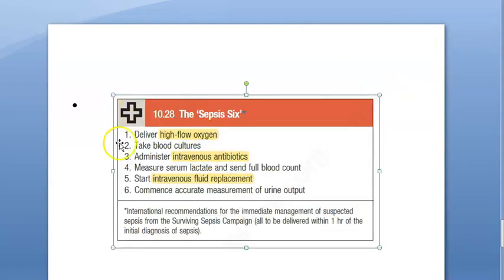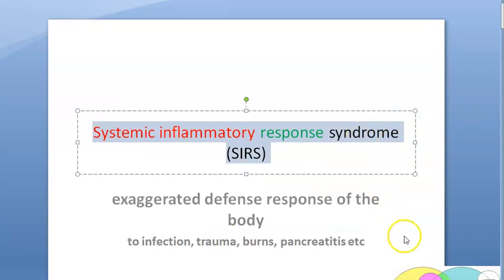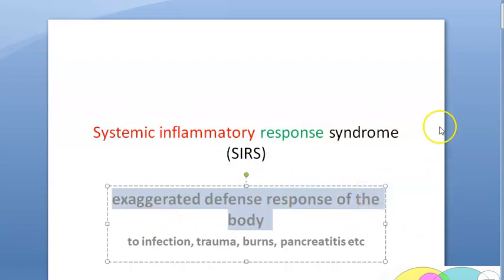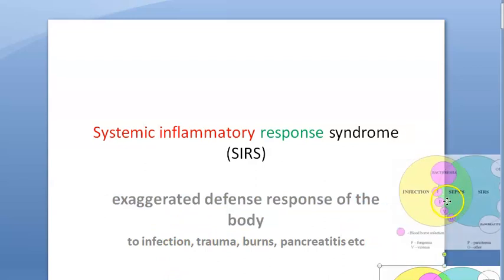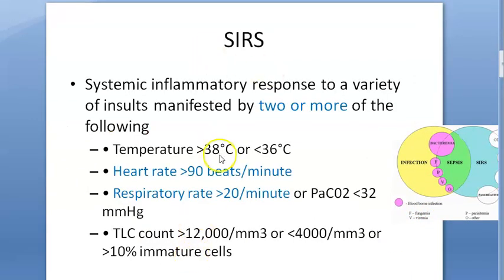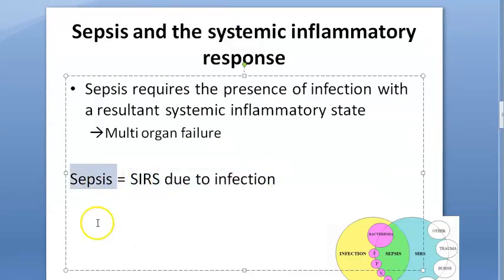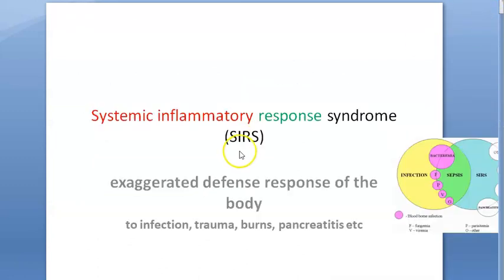How will you treat sepsis? You will give oxygen, antibiotics, and fluids. You will measure serum lactate — if it becomes more, it's bad. Then you will take a blood culture and find out which organism you have to treat against. So this is all about Systemic Inflammatory Response Syndrome. It's the exaggerated defense response of the body to infection, trauma, burns, pancreatitis or anything. SIRS involves temperature changes, tachycardia, tachypnea, and abnormal WBC count. Sepsis is SIRS due to infection. That's all for now, guys. See you in the next video.